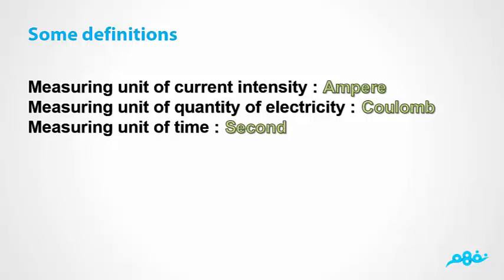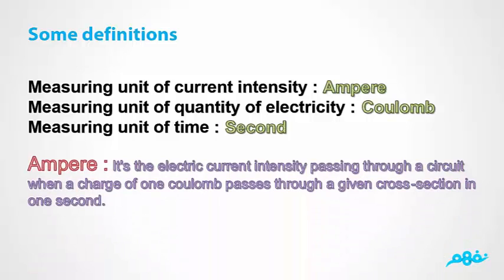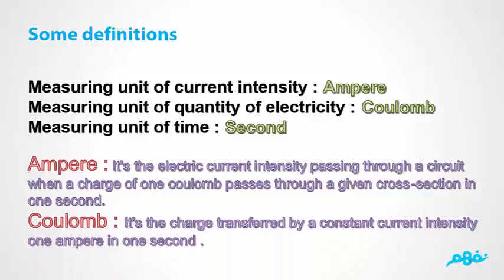Ampere: The electric current intensity passing through a circuit when a charge of one coulomb passes through a given cross section in one second. Coulomb: The charge transferred by a constant current of one ampere in one second.